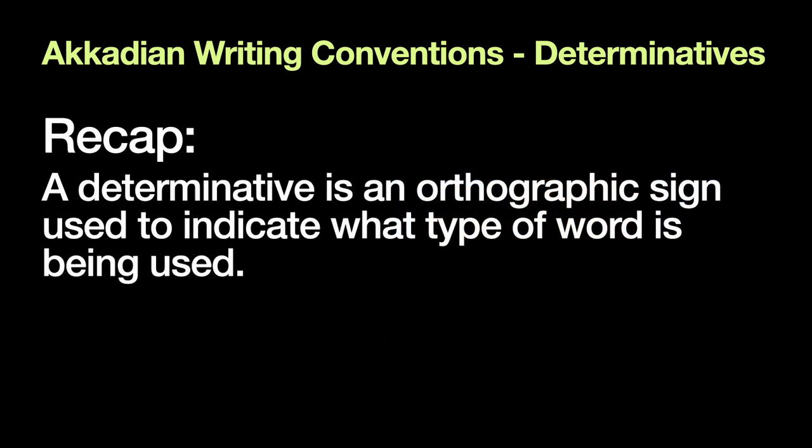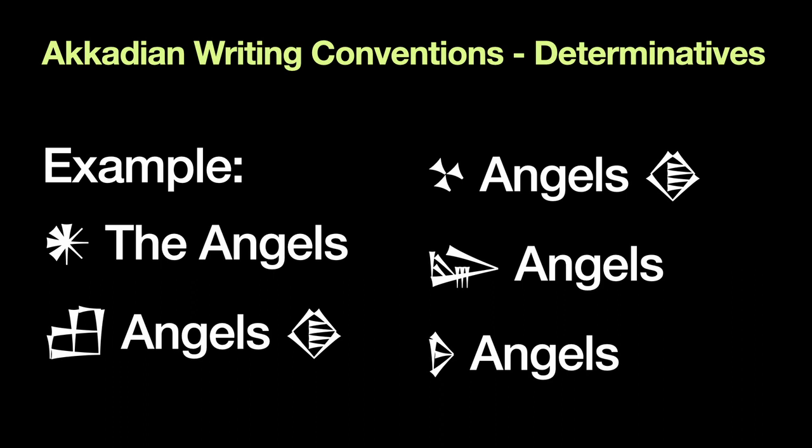So just to recap: a determinative is an orthographic sign used to indicate what type of word is being used. We thought of the English word 'angels,' and we can apply any number of Akkadian determinatives in front of that word, and that's going to let us know what it is — the heavenly beings, a city, a place like the Angeles National Forest, a team like the baseball team, or a group of women like those found in Charlie's Angels. Just by reading the determinative or determinatives that hold the word in place, you know what the word is referring to specifically.